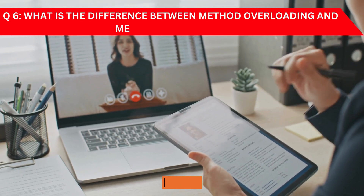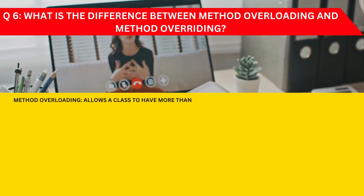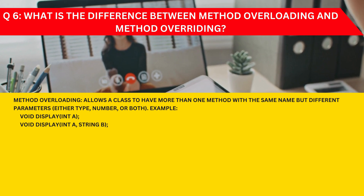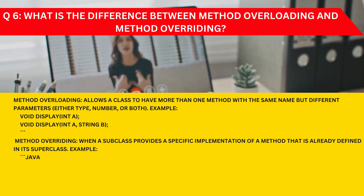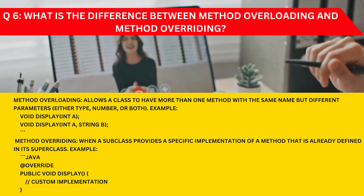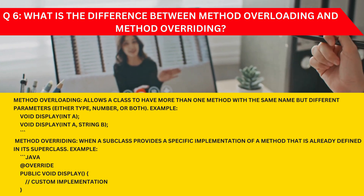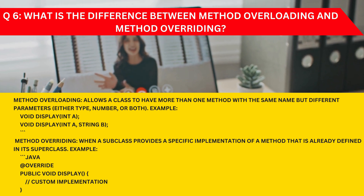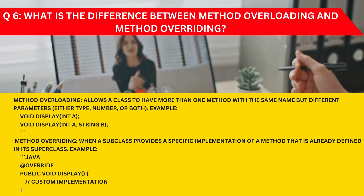Question 6: What is the difference between method overloading and method overriding? Method overloading allows a class to have more than one method with the same name but with different parameters — either type, number, or both. Method overriding is when a subclass provides a specific implementation of a method already defined in its superclass. Code snippets are provided — please practice with different examples.